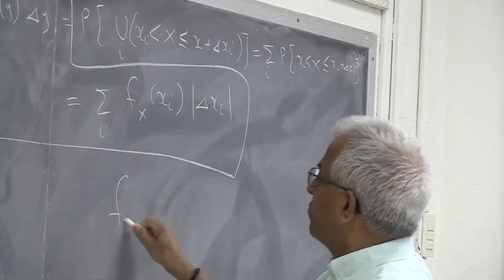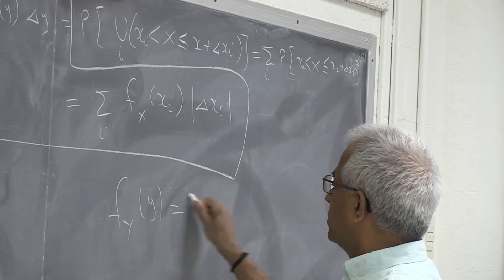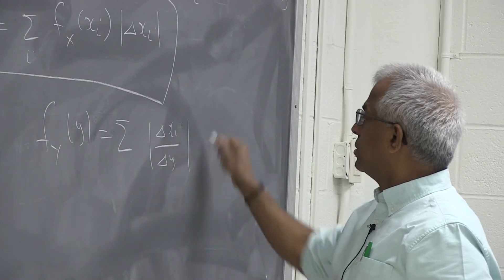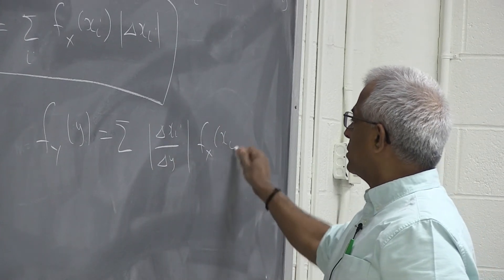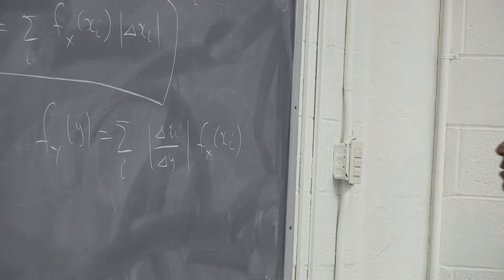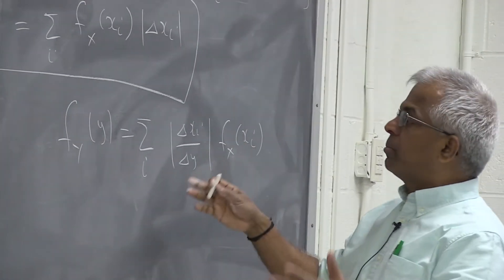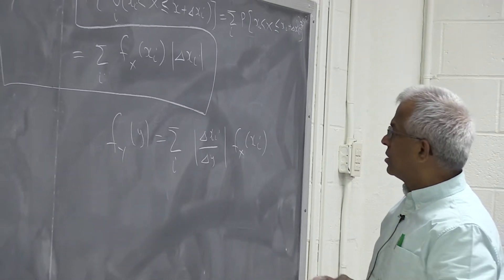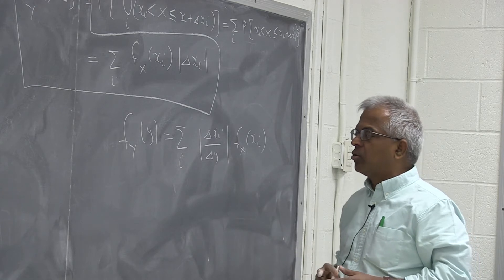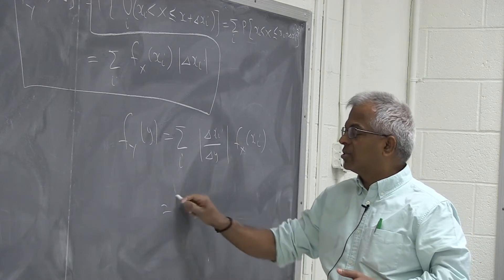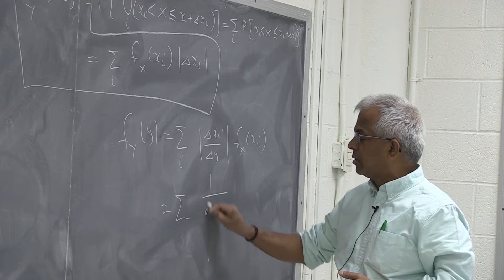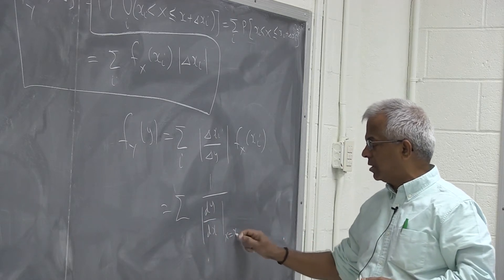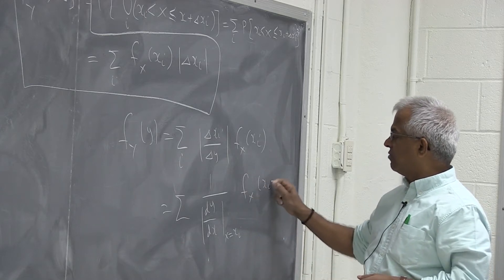So that gives us that f_y(y) is summation delta xi over delta y f_x(xi). Summation is on multiple the roots. And to make this approximation more and more accurate, we make delta y tend to 0. Then delta xi goes to 0. And this becomes the ratio of dx by dy or classic way this is written is 1 over dy by dx evaluated at x equal to xi multiplied by f_x(xi).